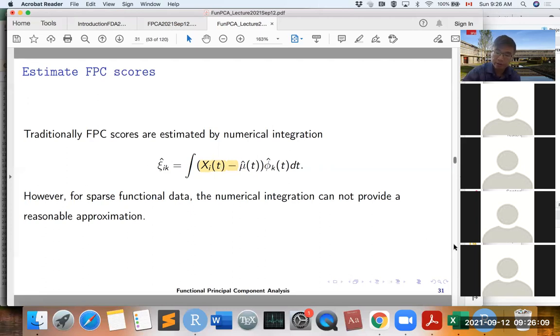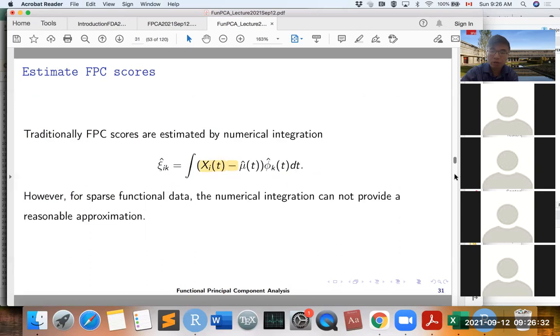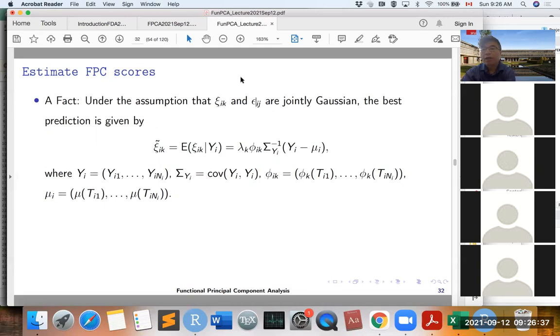So one fact we know is that if we assume that the LPC score—you can see here, this is the LPC score, I'm sorry for the change of the notation—so the LPC score and the measurement error, actually, if they are jointly Gaussian, then we can predict, we can get that the expectation for the LPC score ξ_ik, conditioned on the observed data Y_I, will be, can be written like this. This is just the conditional expectation from the jointly Gaussian. So then we can see that this conditional expectation will be the best prediction for the LPC scores.